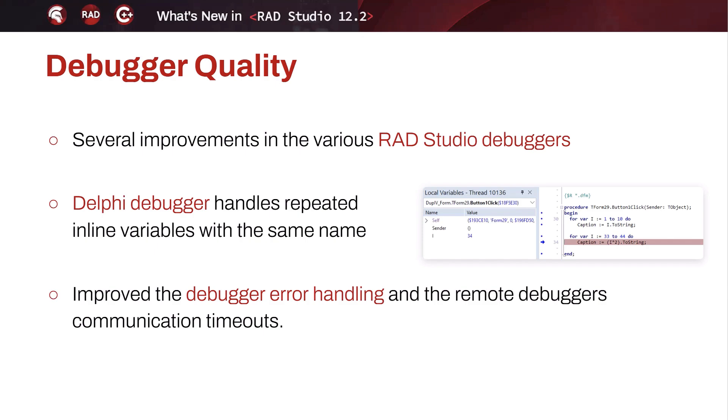We're focusing on quality, and these are the kind of quality of life improvements — just general quality improvements — we put into 12.2.